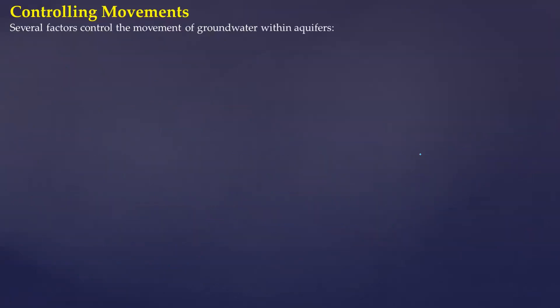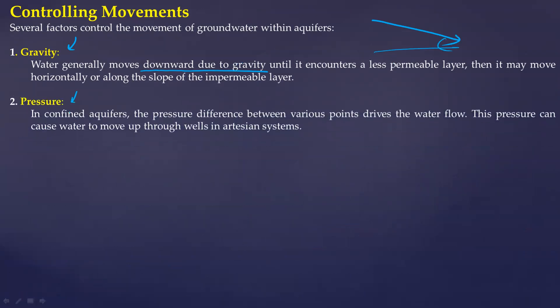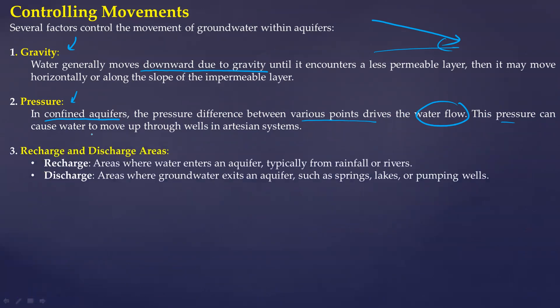What are the controlling factors or controlling movement factors? The first factor is gravity itself. Water generally moves downward due to gravity. Slope and the degree of slope and the gradient is very important. Then we talk about the pressure gradient. In confined aquifers, pressure difference between various points drives the water flow. Pressure can be causing water to move up through wells in artesian systems as well. Then you have recharge and discharge areas. Recharge areas where water enters into aquifer. And what is discharge? Where groundwater exits as aquifer, such as springs, lakes, pumping wells. This is going out, this is coming in.